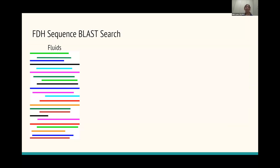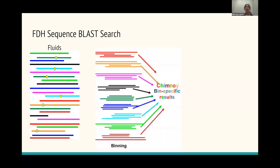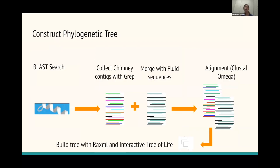Basically for my project, again, I'm comparing fluids and chimney sequences. So I look at the fluid sequences first and then I pick out those sequences that are for the FDH proteins. And then I look at the chimney mags themselves, and I locate which mags have reflections of those FDH sequences. And so once I have identified those, I'm able to pull those out using a grep search and make a new data set with the chimney sequences. And so I constructed a phylogenetic tree after doing this blast search and collecting the chimney contigs. I merged it with the fluid sequences from the original 2022 paper.